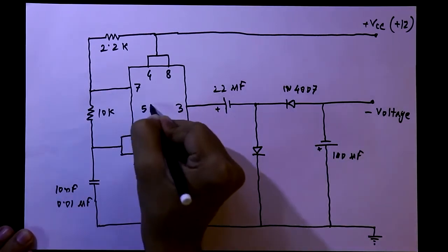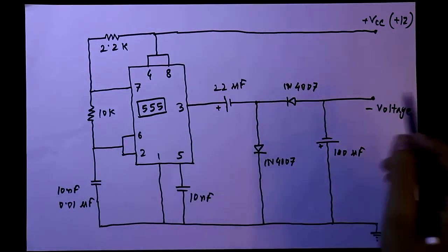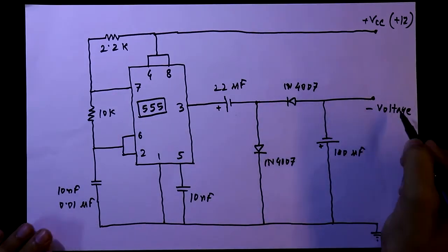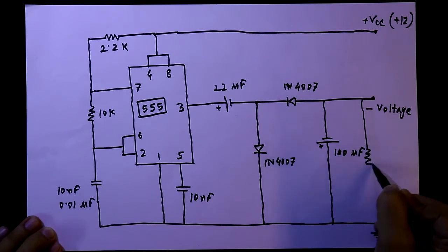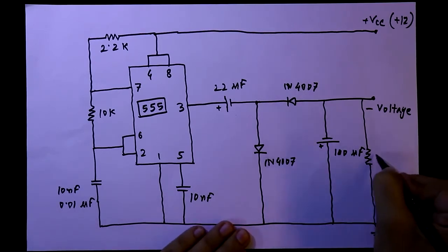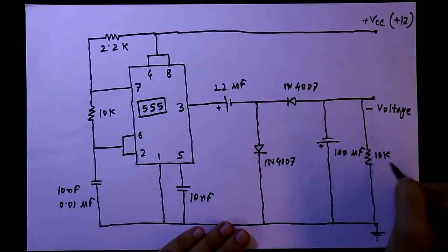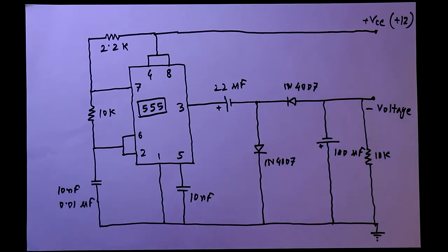This IC is 555. We have to connect another resistor in between the negative voltage and the ground — it is 10kΩ and it is the load resistor. So this is the circuit. Now we will see this circuit on the breadboard.